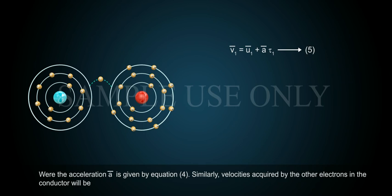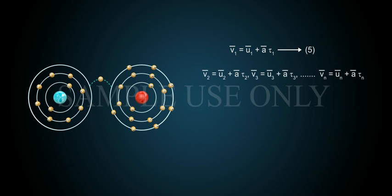Similarly, velocities acquired by the other electrons in the conductor will be: v2 bar equals u2 bar plus a bar tau2; v3 bar equals u3 bar plus a bar tau3; and so on, up to vn bar equals un bar plus a bar tau n.